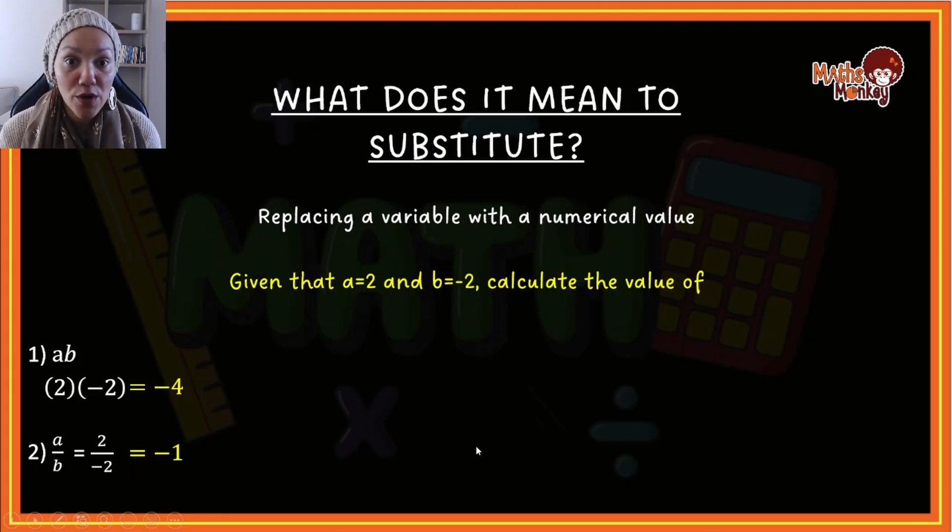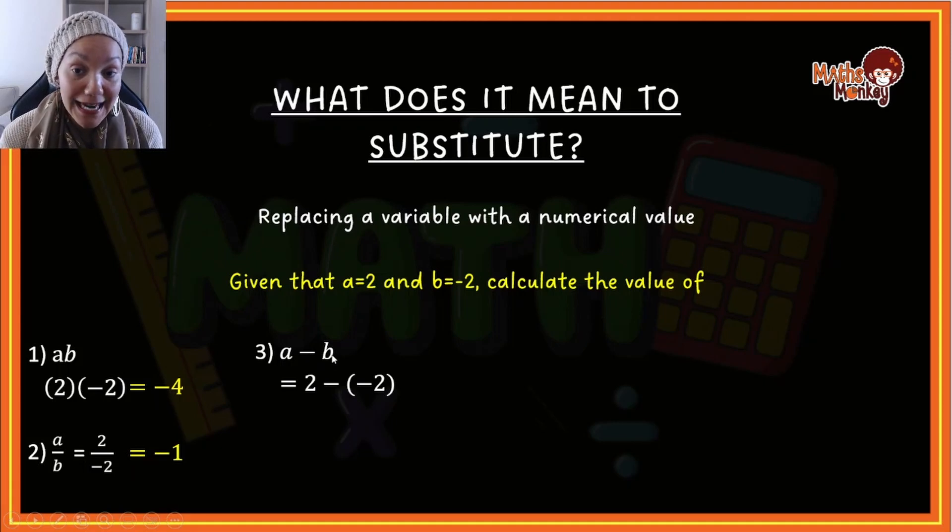I think you can see the gist of how we would substitute. What if we had a situation where it's a minus b? Now please note: a is 2, but b is negative 2. This minus is telling us what we need to do between a and b, but b has a negative of its own. So this is how you would replace the b. You would say 2, because a is 2, that minus is the minus from the question, and then b is actually negative 2.